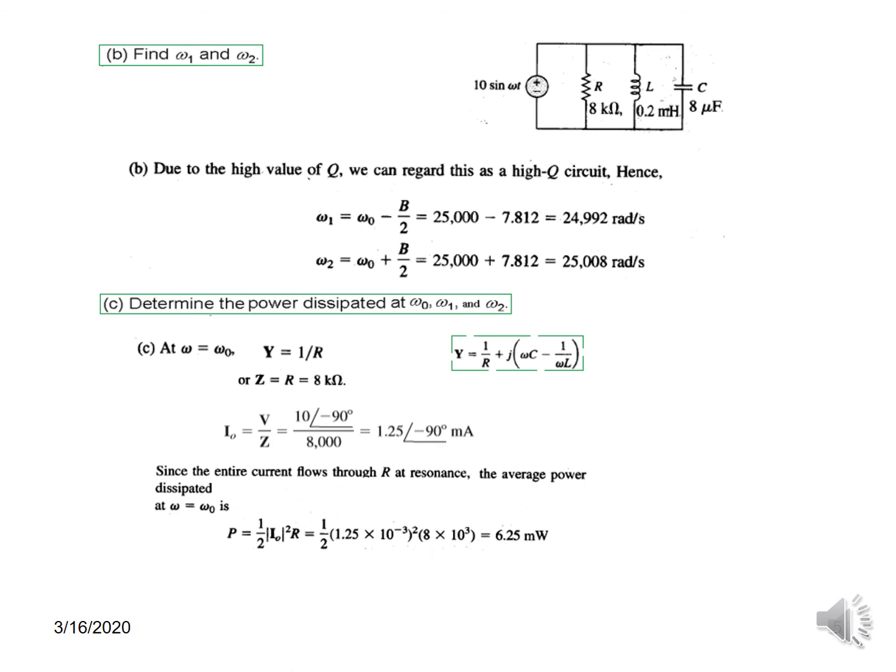And to find power we just take the magnitude of this current, so 1.25 milliampere, and the formula is ½I₀²R average power. So plugging in the value of current and R, 6.25 milliwatt is the power at ω equal to ω₀. Now we have learned that the other two frequencies are actually half-power frequencies, so the power at these two frequencies can be simply found by dividing by 2. So 6.25 divided by 2 gives 3.125 milliwatt of power.